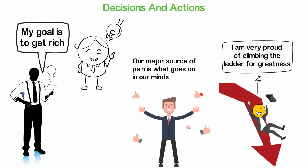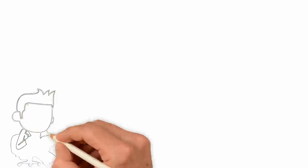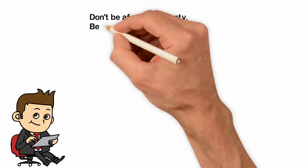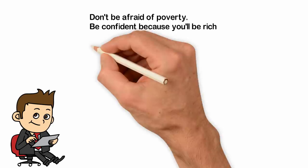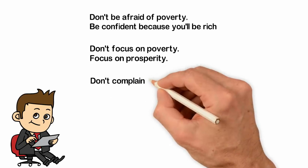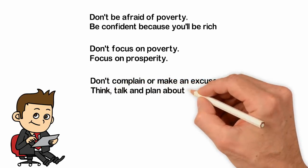If you truly burn your bridge, you'll activate your reticular activating system and start seeing things that will help you to be rich. You'll start seeing those books that will be helpful. You'll start meeting people with the same mindset. You'll start seeing opportunities to make money. And when you take actions, make mistakes, and fail, you will not internalize those failures because you've decided to be rich. Those mistakes and failures will appear to you as steps on the ladder of success. Don't be afraid of poverty. Be confident because you'll be rich. Don't focus on poverty. Focus on prosperity. Don't complain or make an excuse. Think, talk, and plan about wealth.